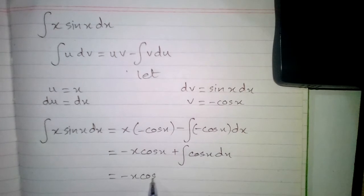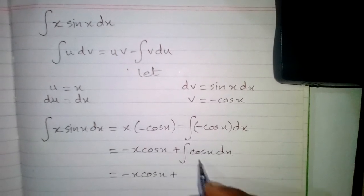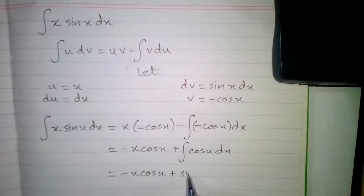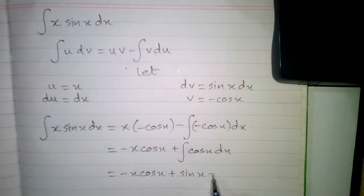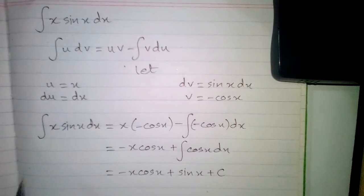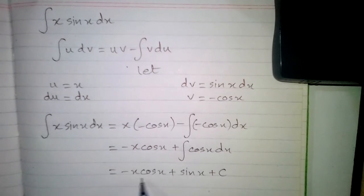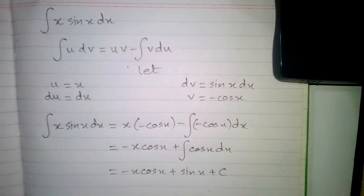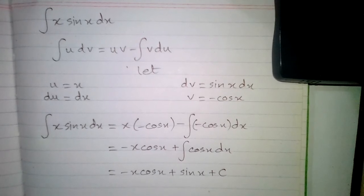Now we have minus x cos x plus integral of cos x is sin x plus c where c is the constant of integration. So the integral of x sin x with respect to x is minus x cos x plus sin x plus c where c is the constant of integration.